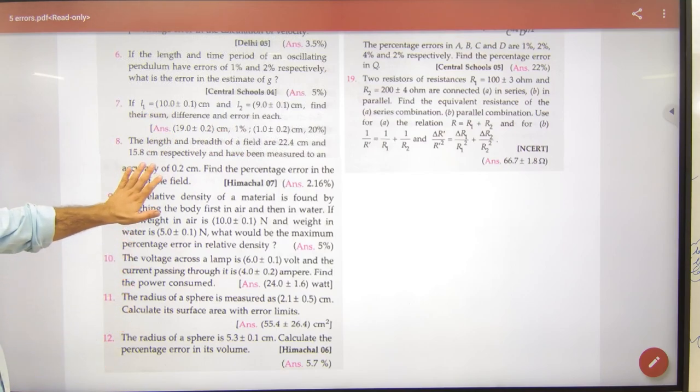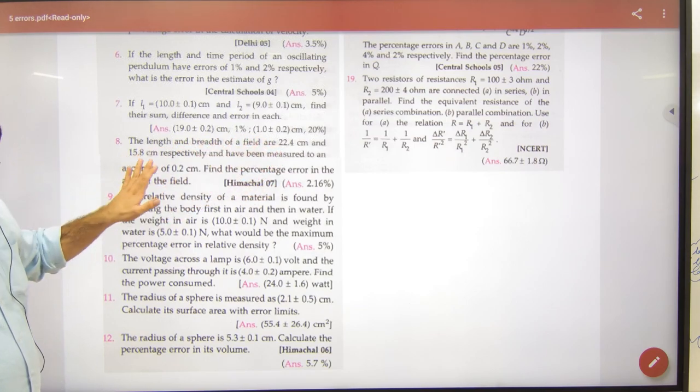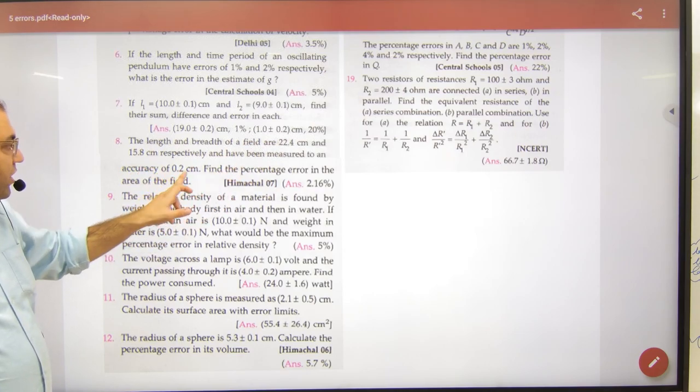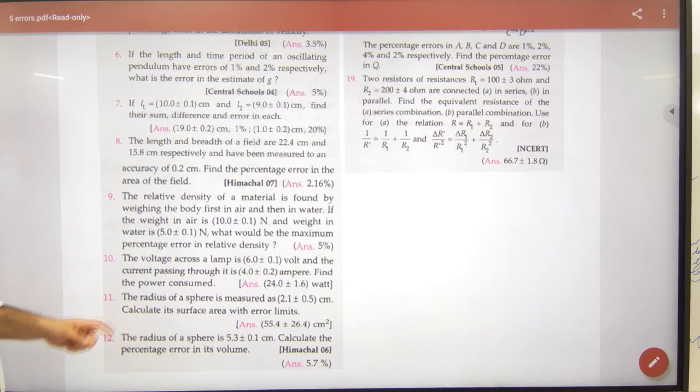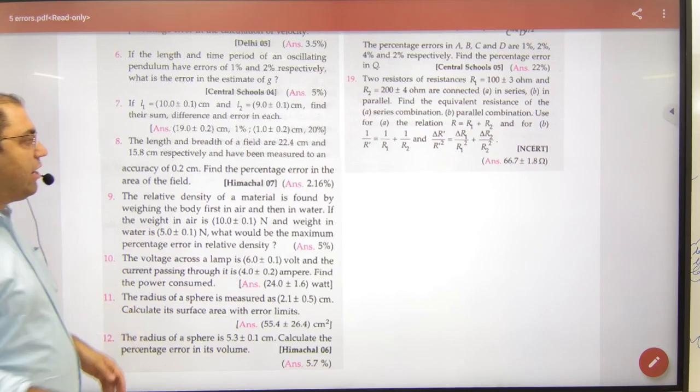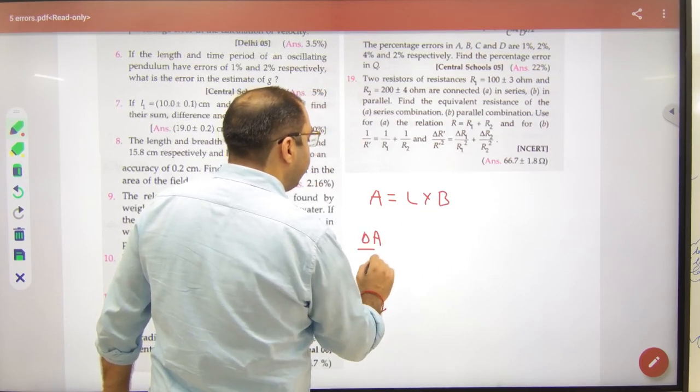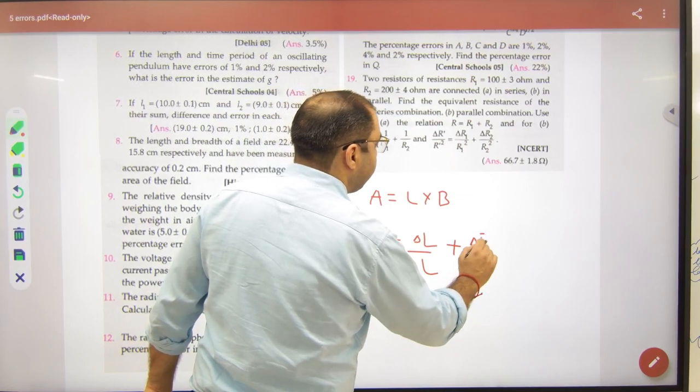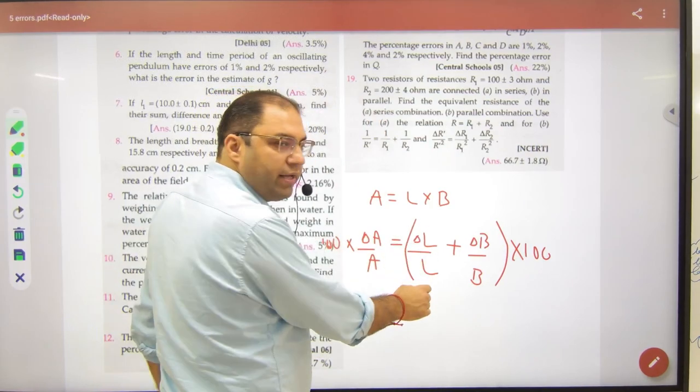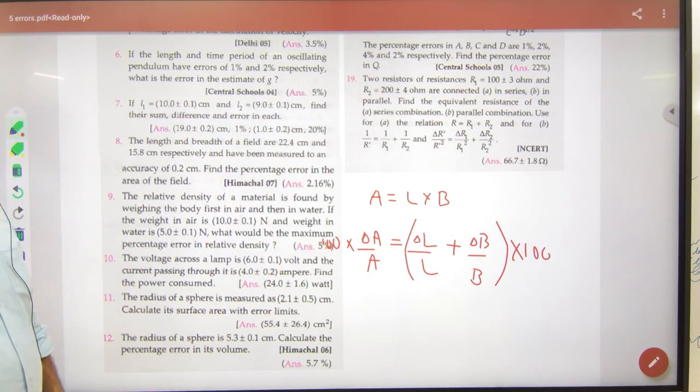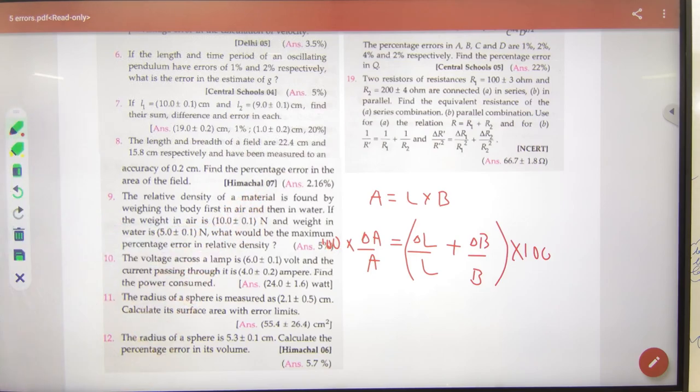Next is eighth. Eighth length and breadth given. So L and B and what is given? Accuracy of 0.2 cm. Accuracy means delta L and delta B. Percentage error in the area, you have to calculate the area. So the formula what you put? L into B. So delta A by A, delta L by L, delta B by B. Hundred sides of both sides. Multiply. So you know delta L, L, delta B, B. Percentage can be calculated. It's the answer. What is it? 2.16? Is it clear here?